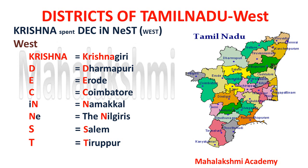In the west division: Krishna stands for Krishnagiri; 'spent' is unimportant so you can skip it; D is for Dharmapuri; E is for Erode; C is for Coimbatore; the first N is for Namakkal; the second N is for Nilgiris; S stands for Salem; and the last T stands for Tirupur. So that is 'Krishna spent December in nest' for the west division.